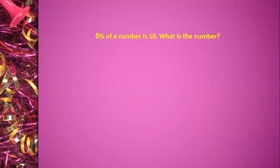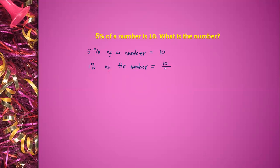Example 1: 5% of a number is 10. What is the number? So 5% of a number is equal to 10. Then 1% of the number is equal to 10 divided by 5. And then 100% of the number is equal to 10 divided by 5 times 100%. So 100 divided by 5 is equal to 20.